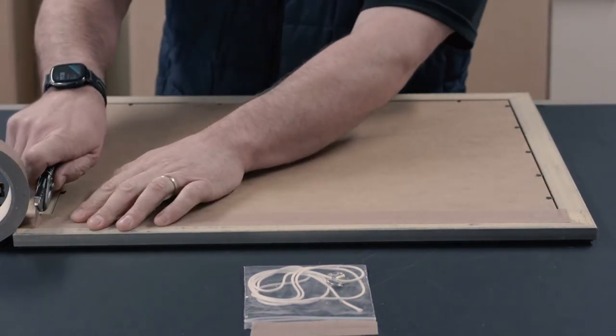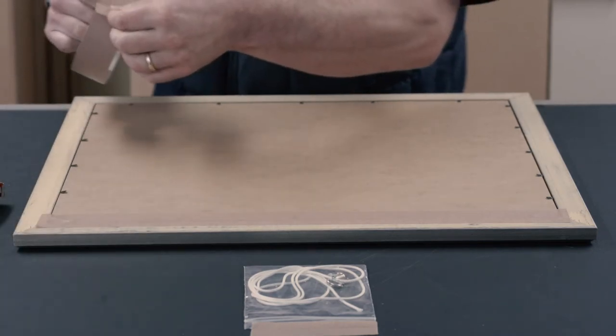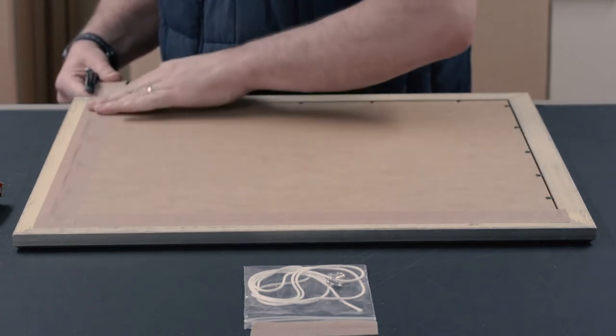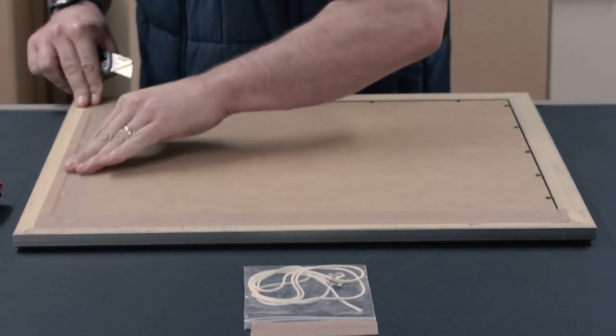Using either the 25 millimeter or the 38 millimeter tape you purchased as one of your accessories, start from one of the corners. Lay the tape across the frame with the majority over the backing board as shown.